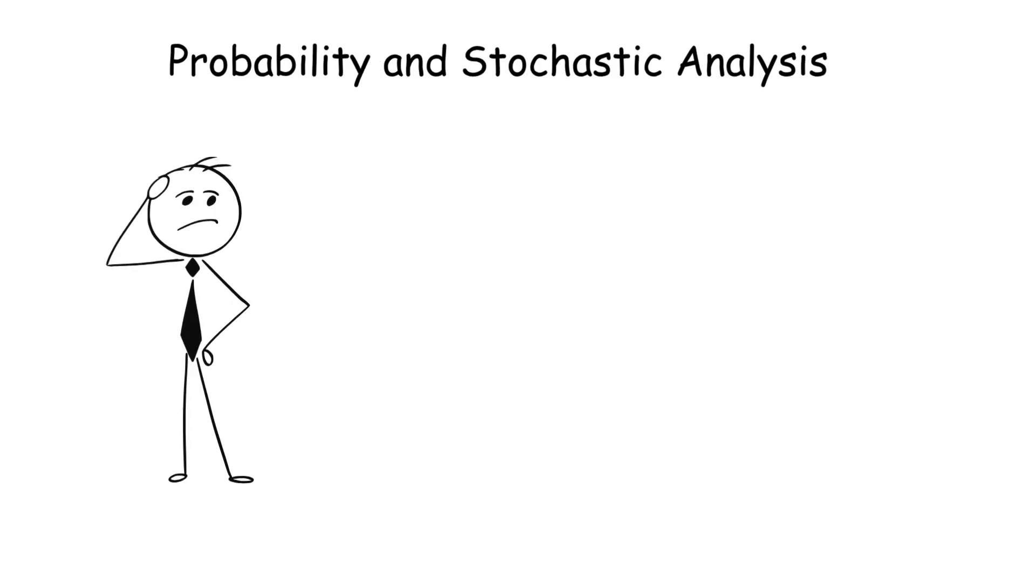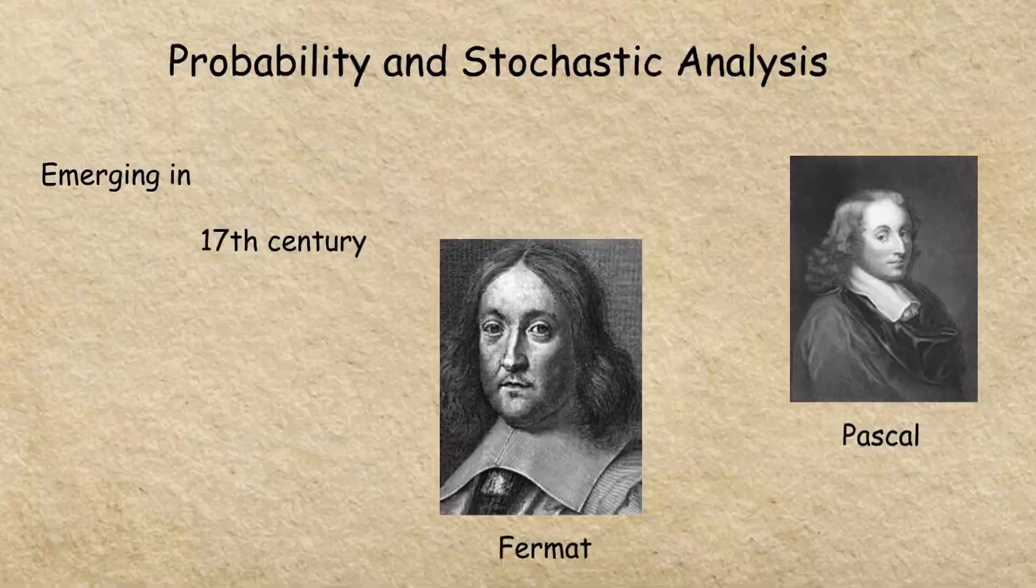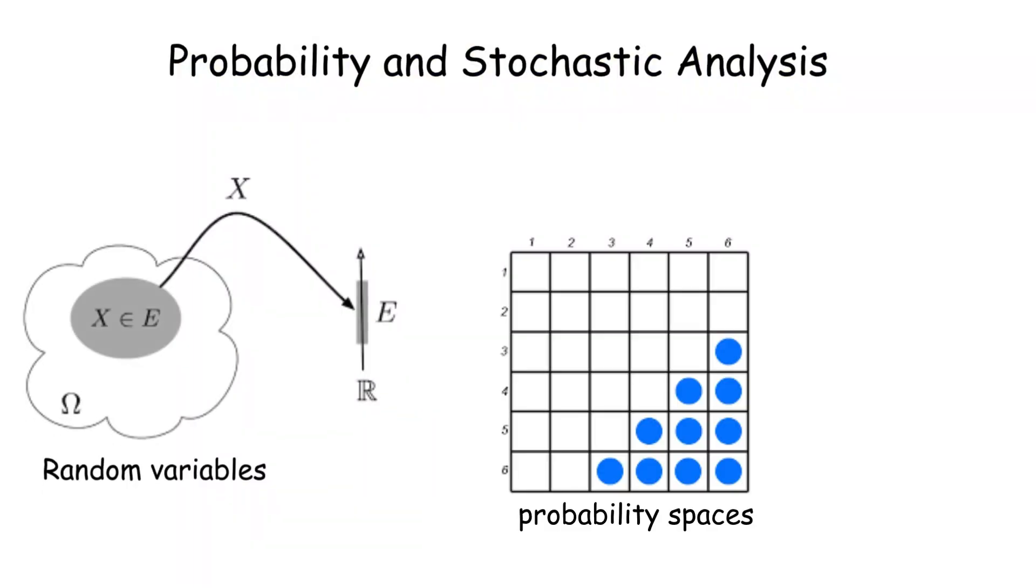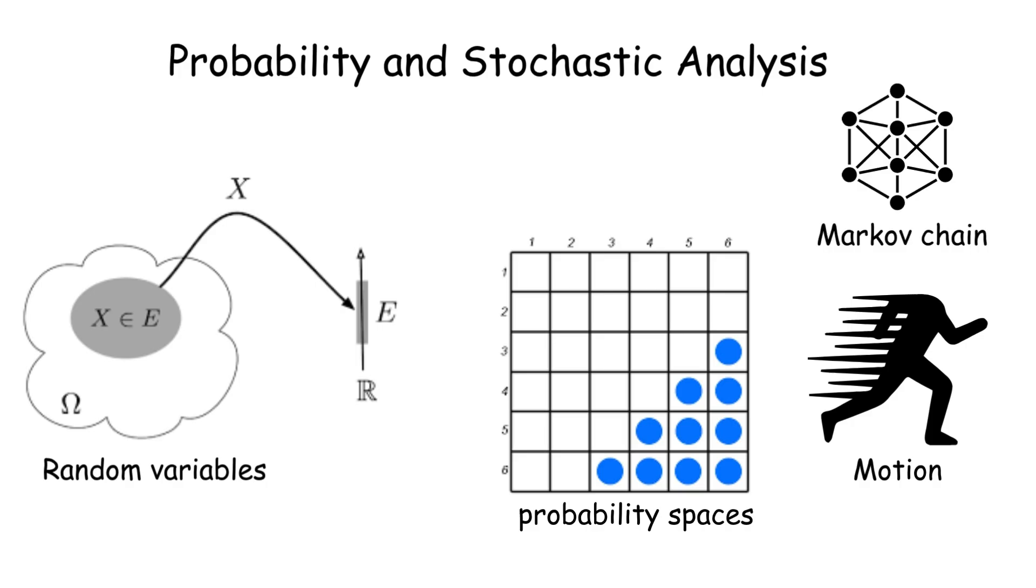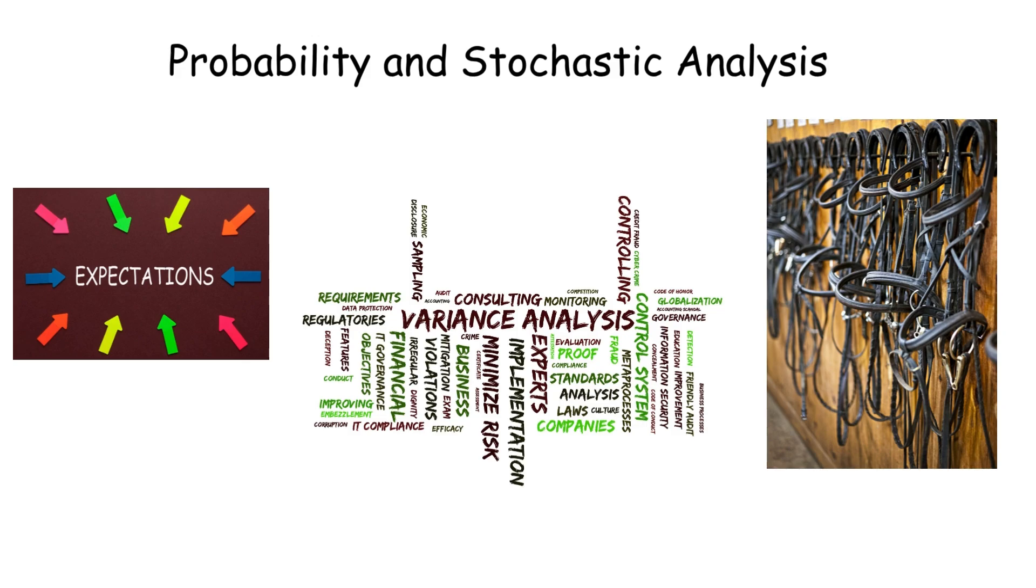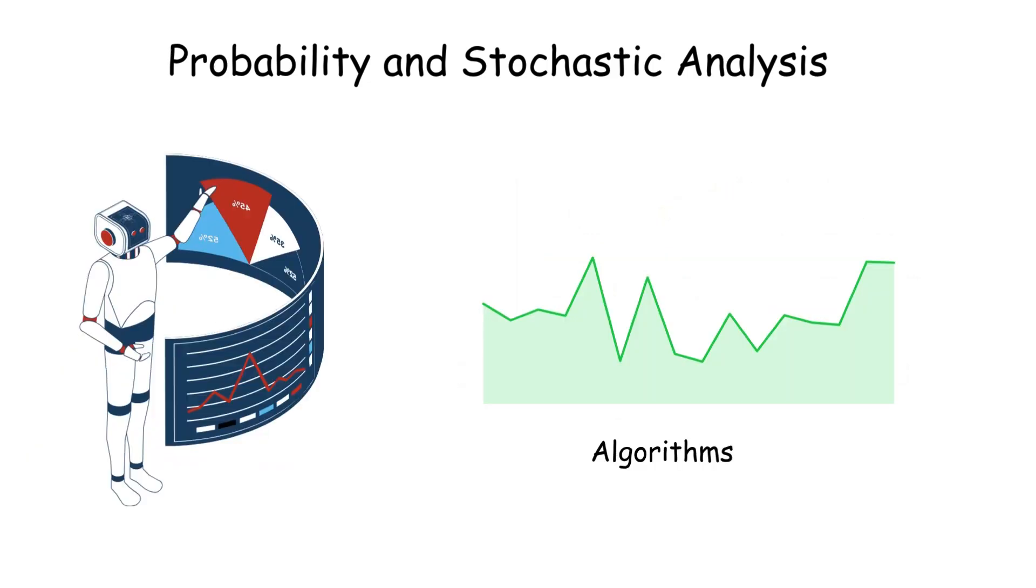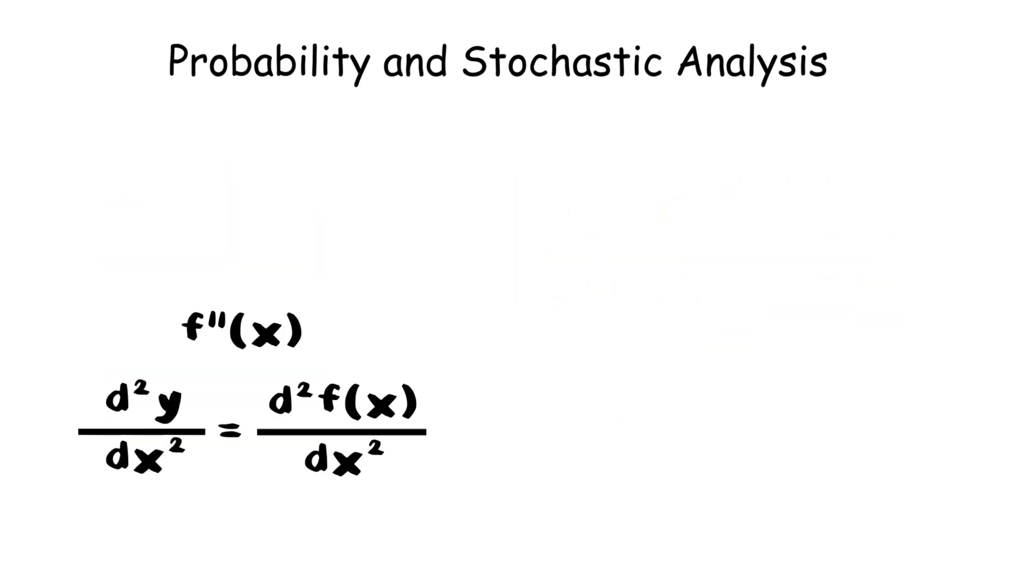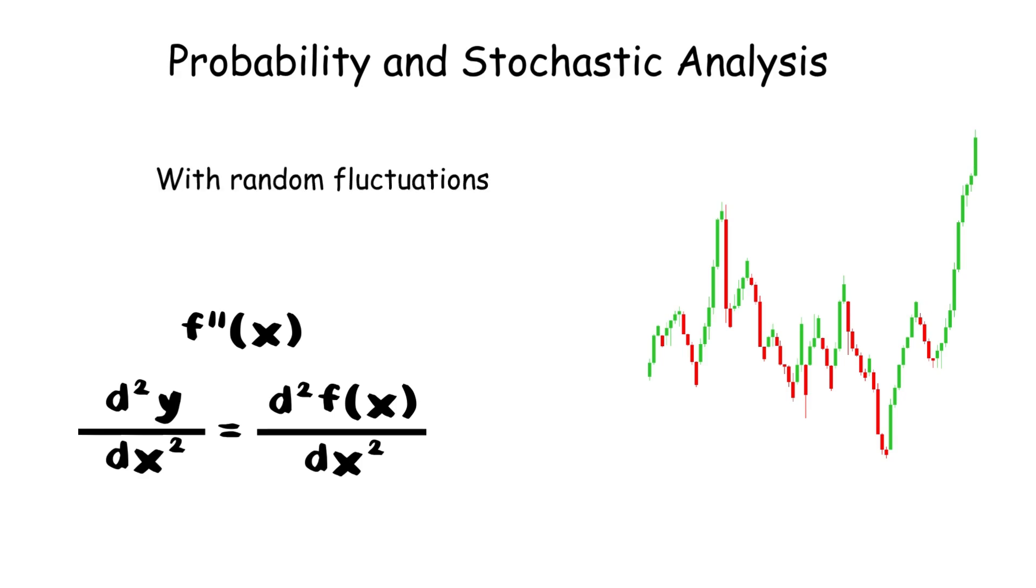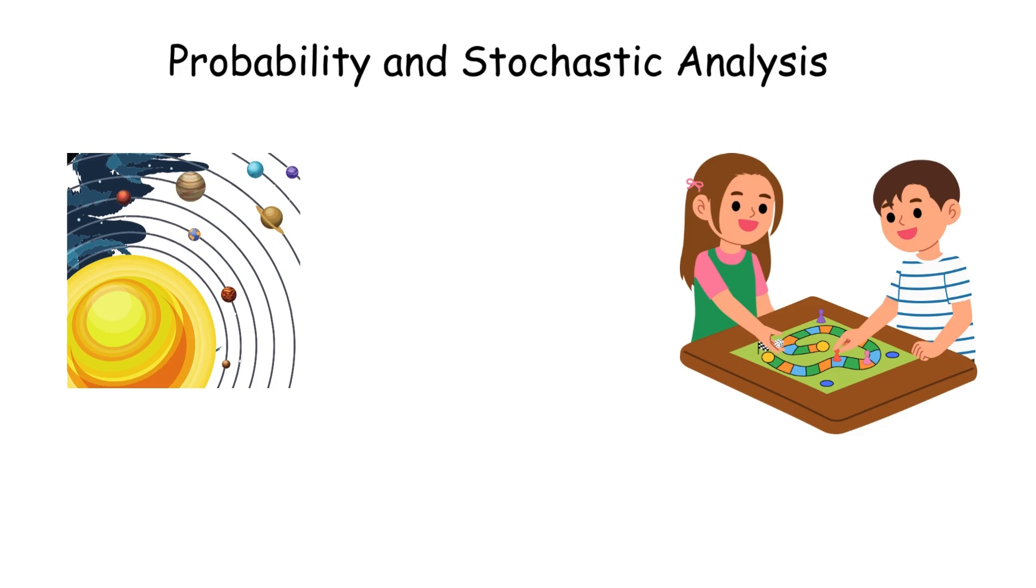Probability and stochastic analysis: This is the mathematics of randomness, modeling uncertainty with precision. Emerging in the 17th century with Pascal and Fermat, it studies random variables, probability spaces, and processes like Brownian motion or Markov chains. Key concepts include expectation, variance, and martingales. It's essential in finance for pricing options, in biology for population models, and in machine learning for algorithms. For example, stochastic differential equations model stock prices with random fluctuations. Unlike deterministic analysis, it embraces chance, making it a dynamic tool for unpredictable systems. It's like playing dice with the universe, but with rigorous rules.